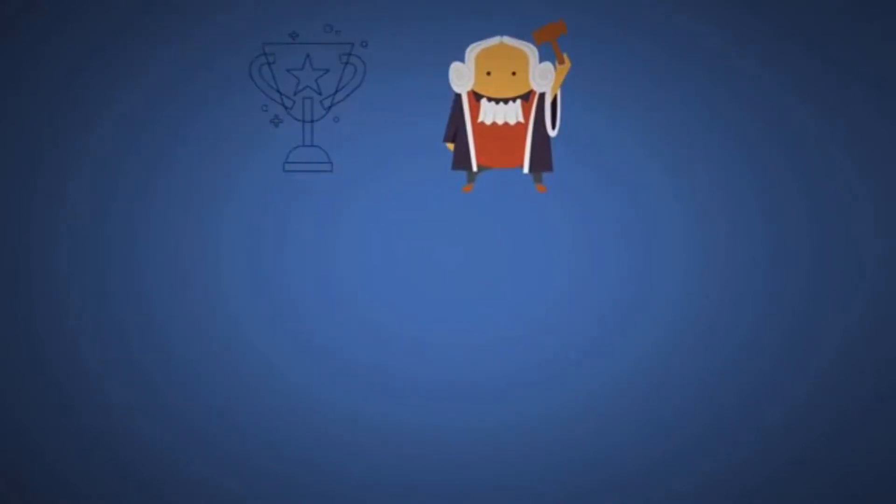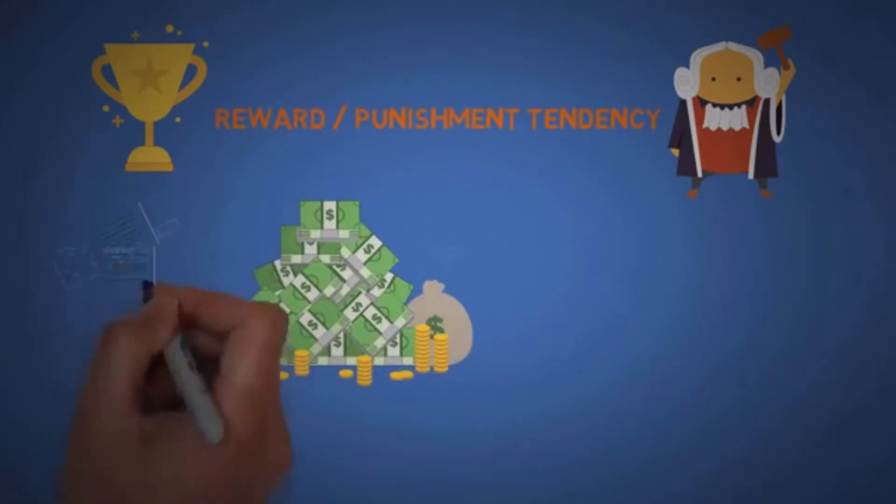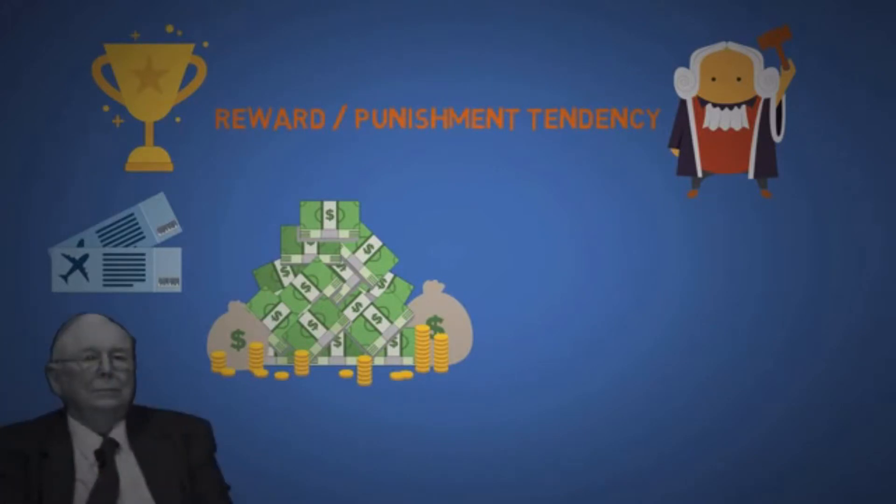The first one is reward slash punishment tendency. If you want to persuade people, just offer them big rewards and incentives. Practically everyone has a price. This might seem obvious, but Charlie says every year he realizes how much he has underestimated the power of incentives. So this bias alone is worth spending hours talking about.